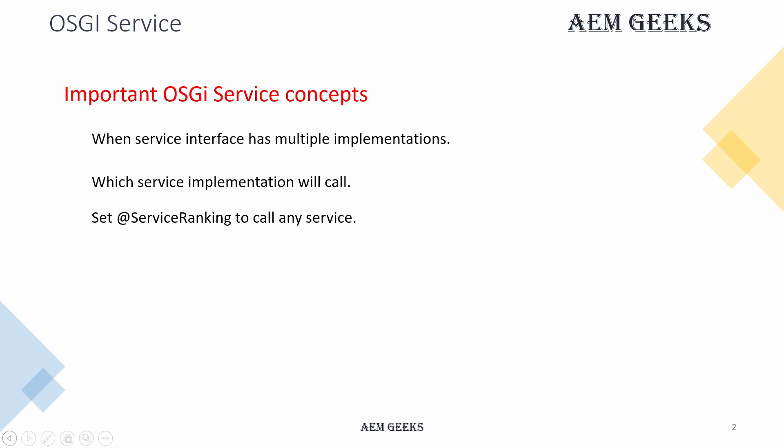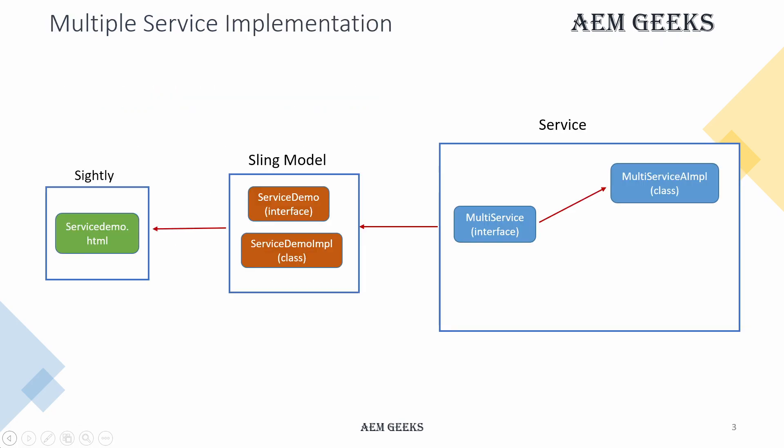We'll define the ranking of that service using a new annotation called @ServiceRanking, and then we'll see how you can call that service in a Sling model as well as other services. We will see the different use cases of which service will be called. The basic use case is: we have a service, we call it in a Sling model, and return that response to the site.